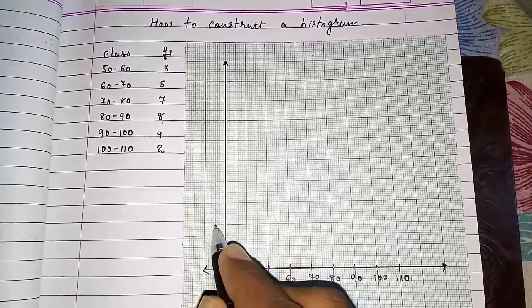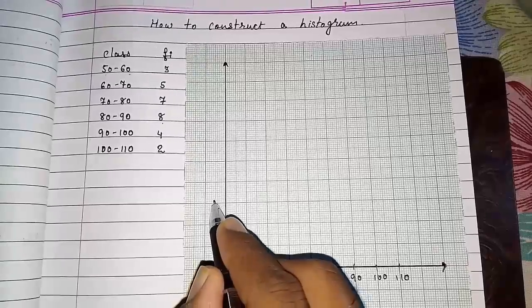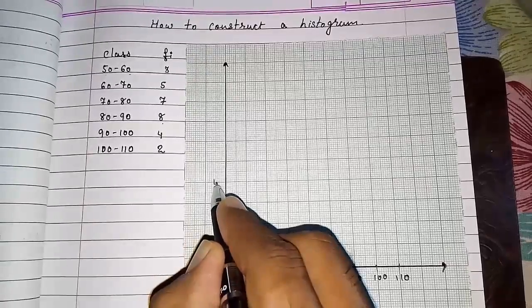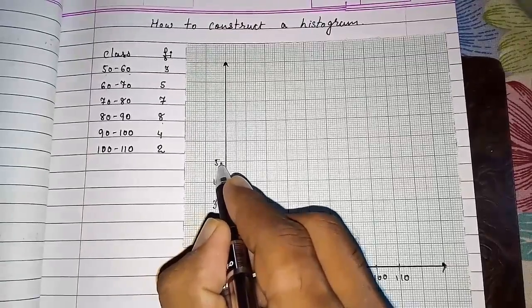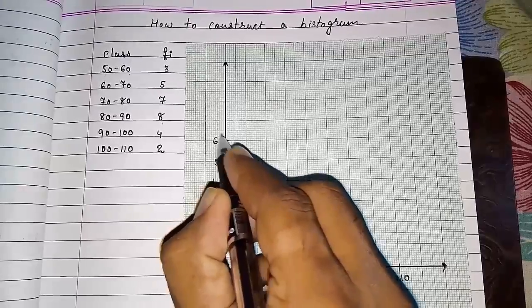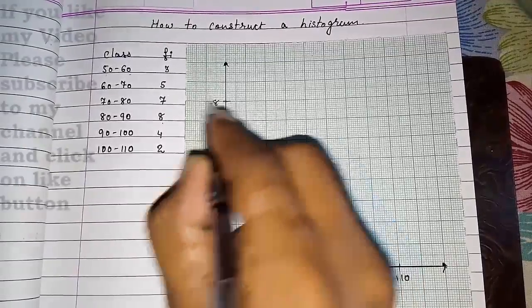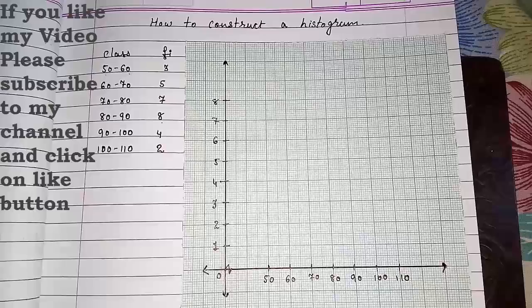Here the frequency is very less. So we will take 1, 2, 3, 4, 5, 6, 7 and 8. Now we know the highest frequency is 8, so up till 8.